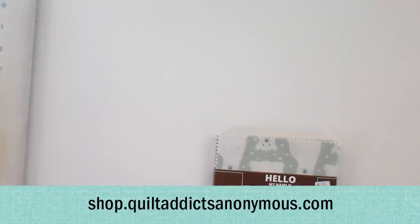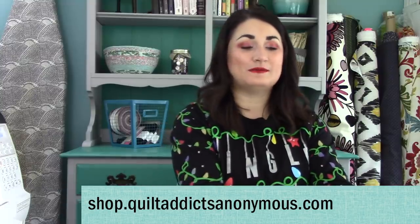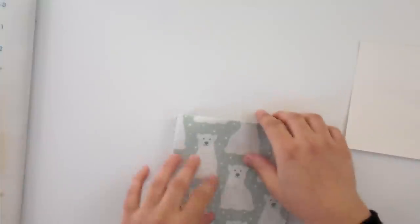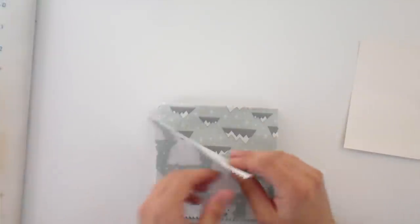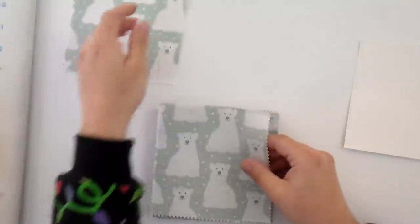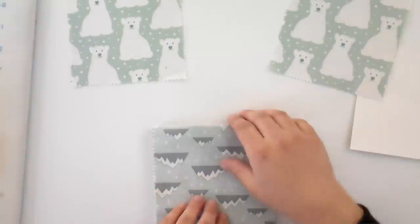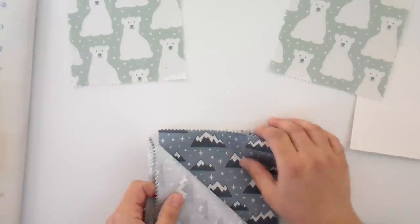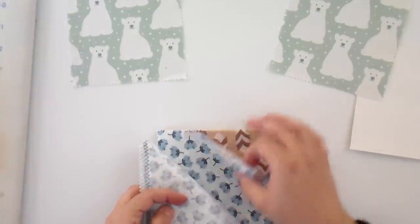We have all the supplies you need for this project at shop.quiltaddictsanonymous.com. I am going to use the charm pack of Arctic by Elizabeth Hartman. It's super cute. It has some fun animals on it. I'll just take a peek at that here. I've got some little bears, a couple of those prints, some mountains, snow. It's just really fun, really cute stuff.